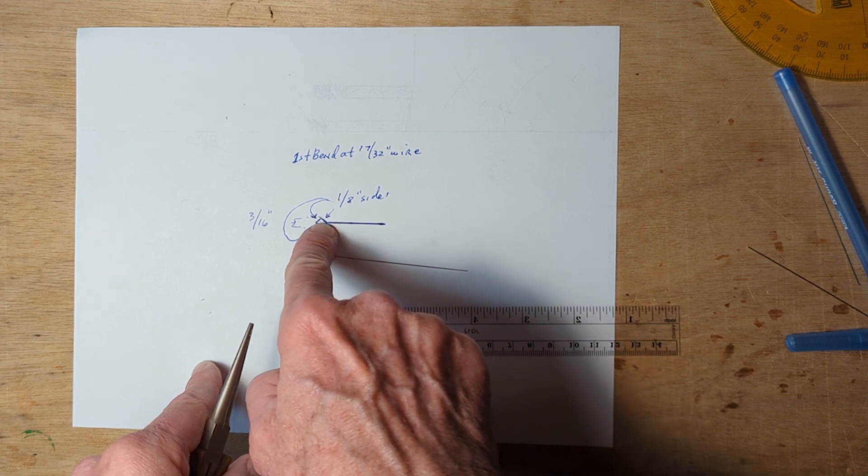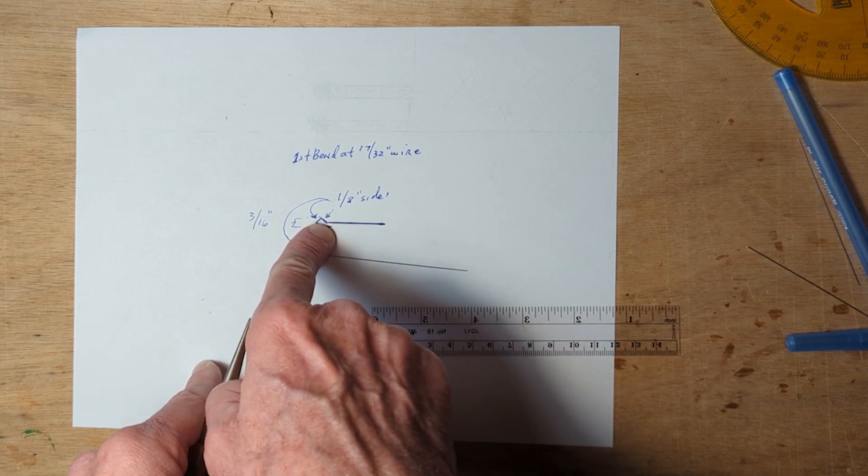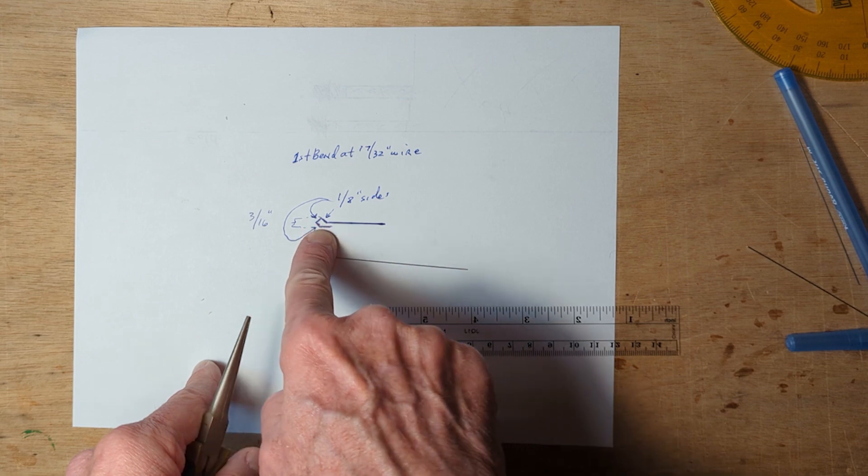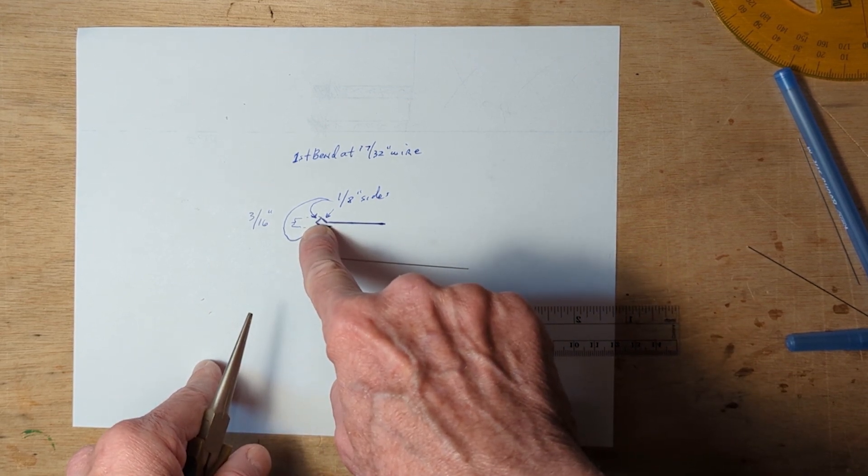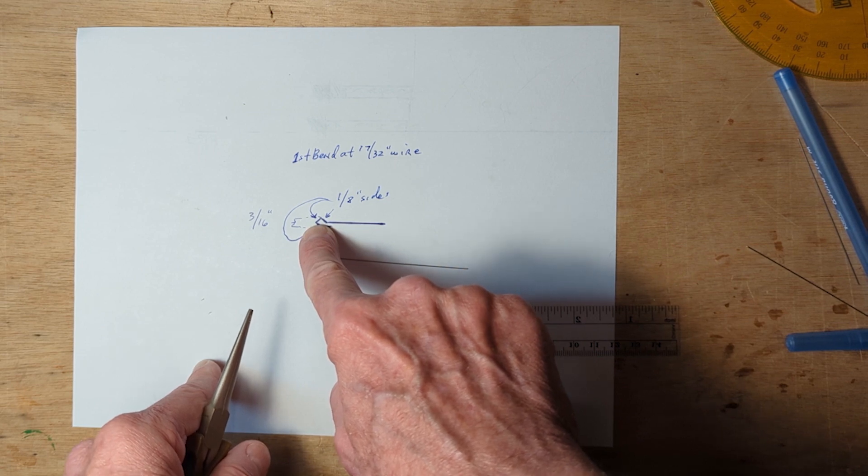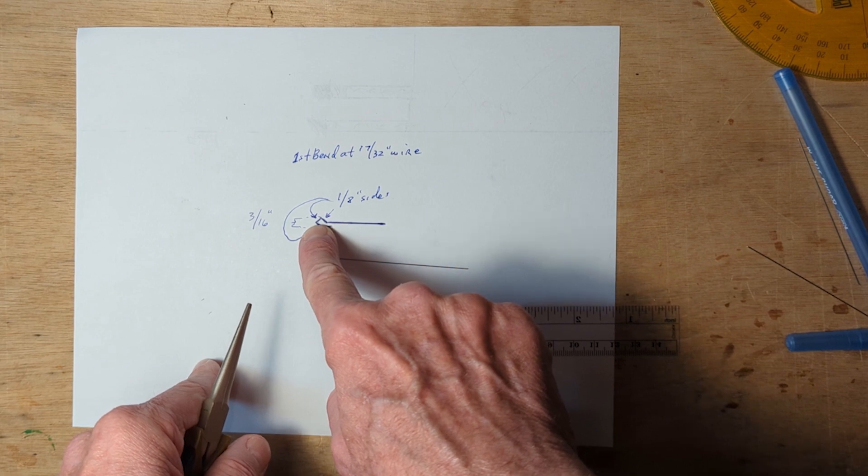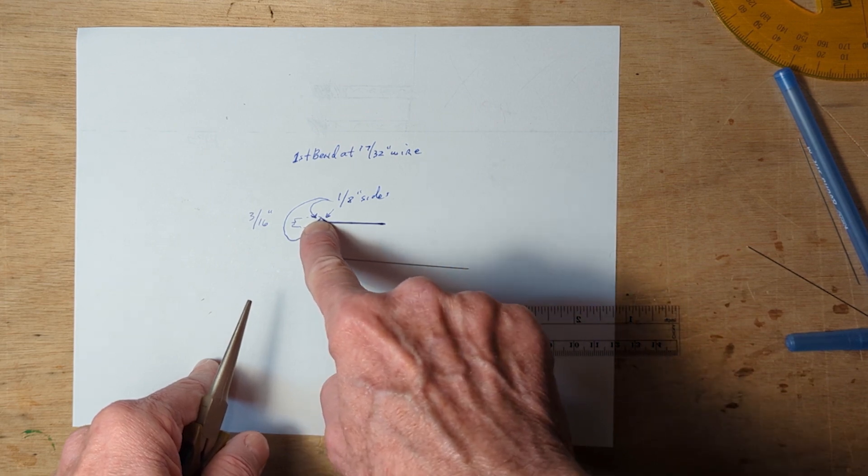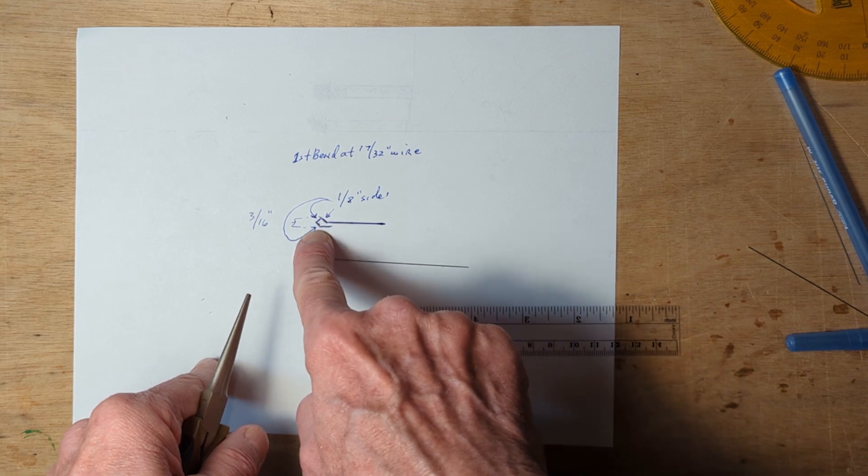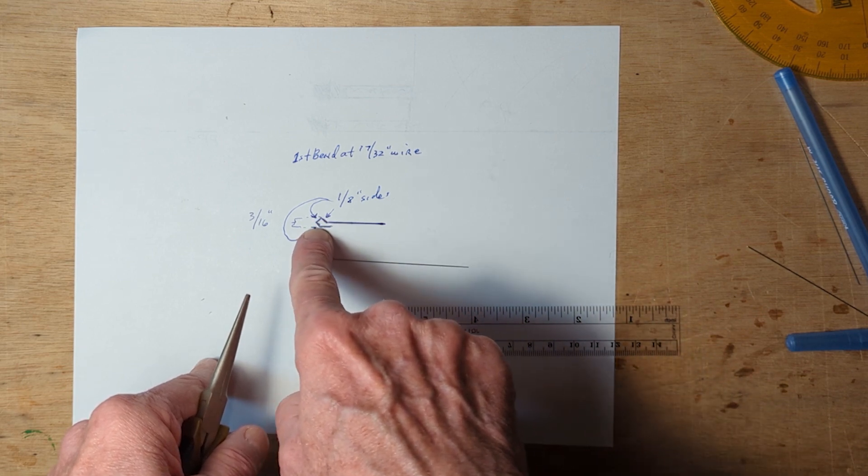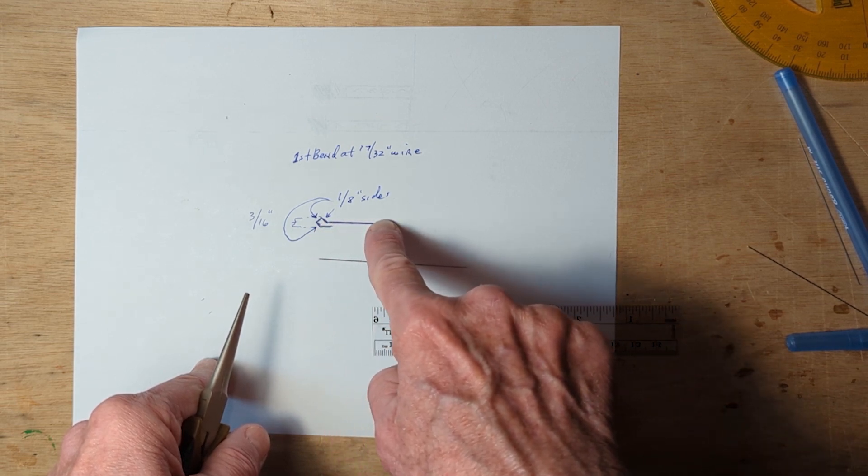The first bend that I'm pointing at right here is going to be shallower than 90 degrees, like 130 some odd, so that the point of the hook where the o-ring is going to rest will also be a slightly acute angle. That keeps the o-ring resting on the point of the hook a little better. This bend at the top of the diamond is going to be roughly 90 degrees, and this one is just whatever it needs to be to put the remaining wire roughly parallel to the shaft.